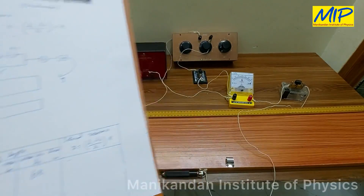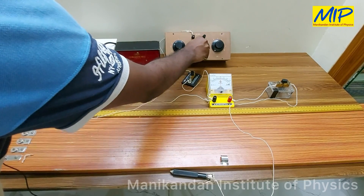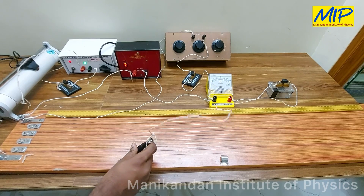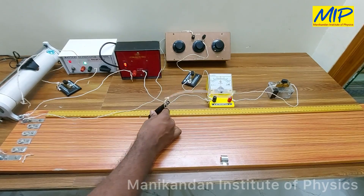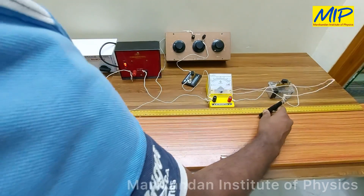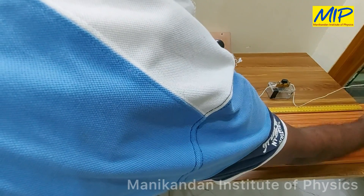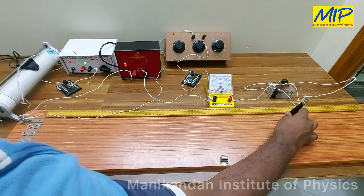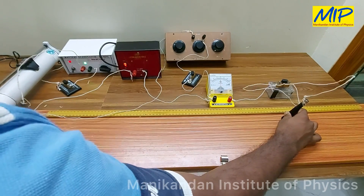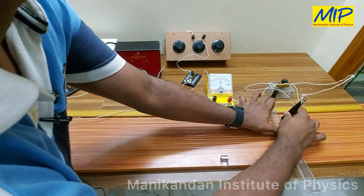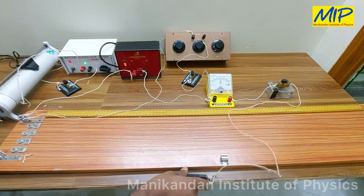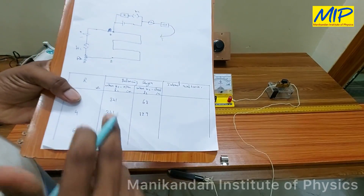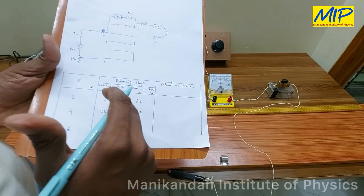Now I am going to increase the value of R from 2 to 4 ohms and find the new balancing length. I observe a right-side deflection at one end and a left-side deflection at the other, so the balance point lies between them. Sliding along the wire — till 100 there is no zero deflection, starting from 101 — the galvanometer shows zero deflection. The balancing length is 129 centimeters for R equal to 4 ohms.